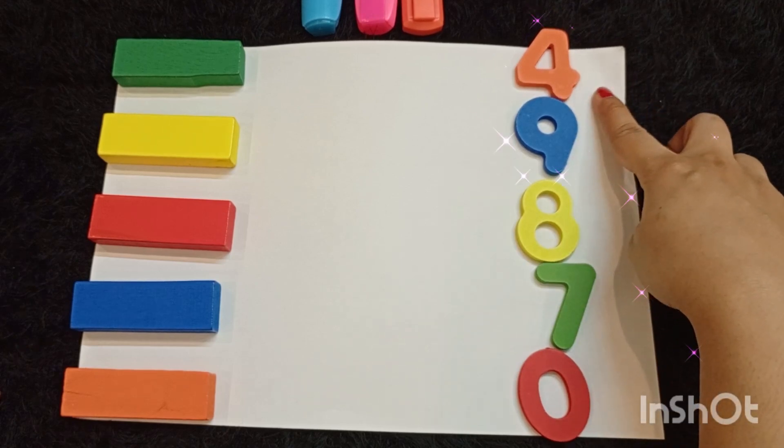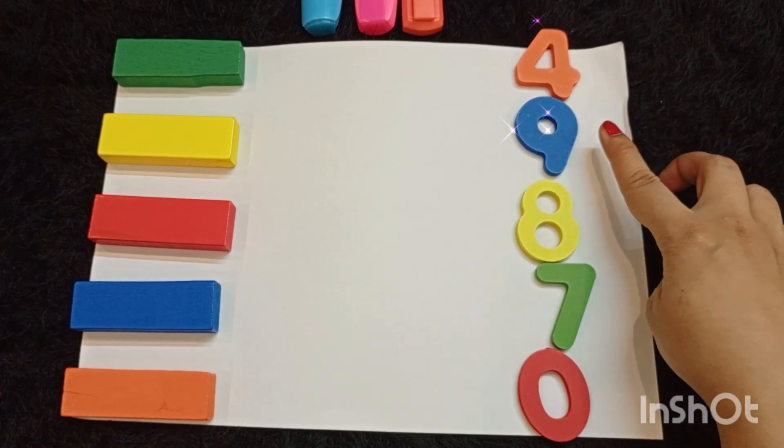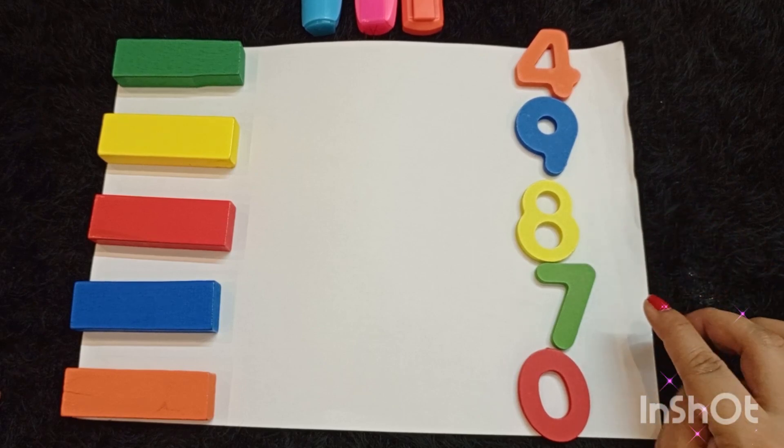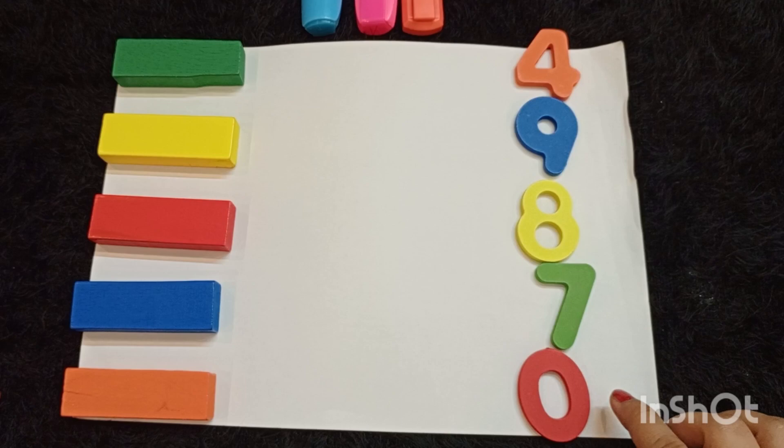The color of 4 is orange, 9 is blue, 8 is yellow, 7 is green, and 0 is red.